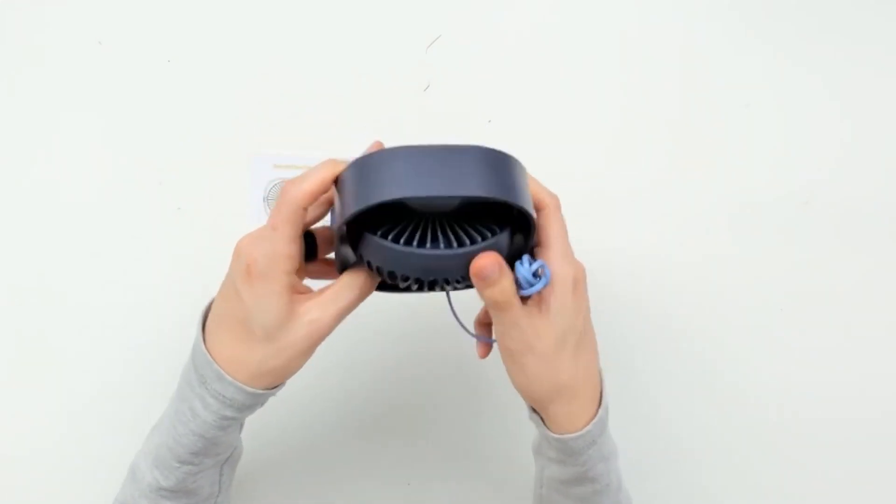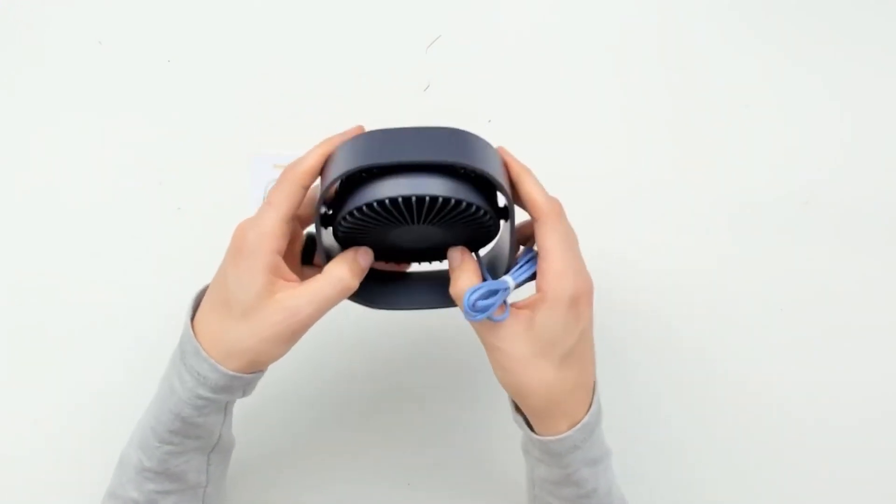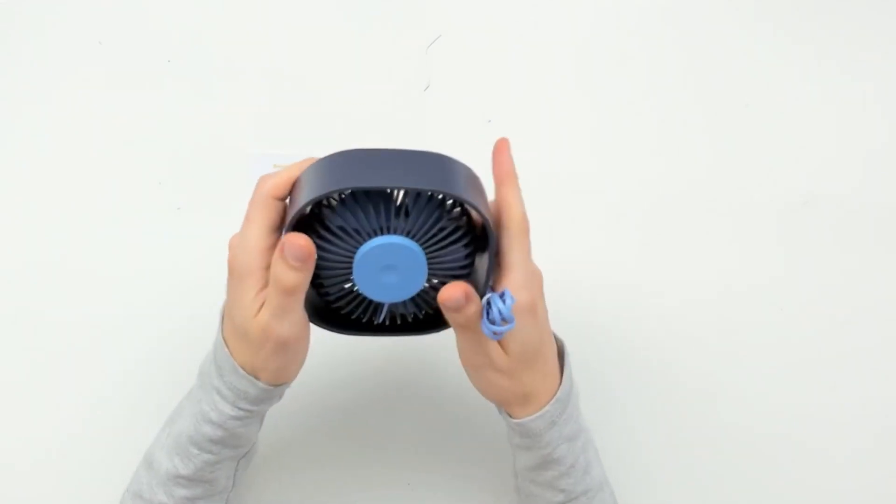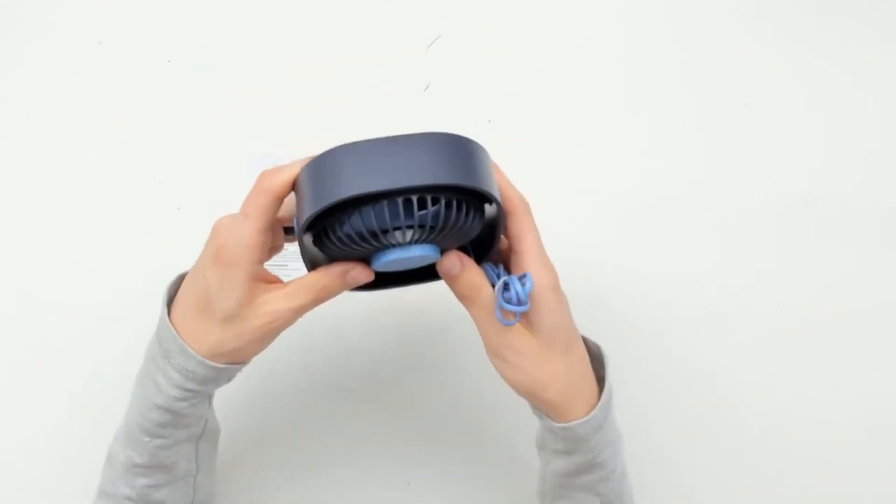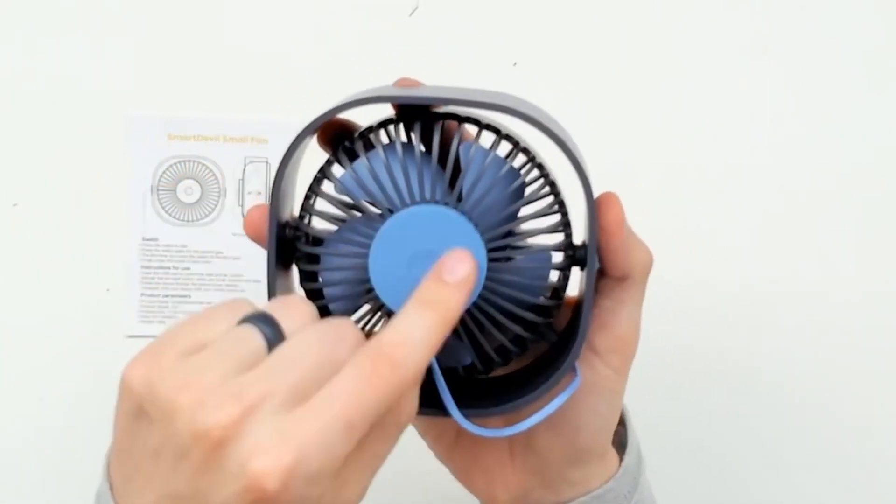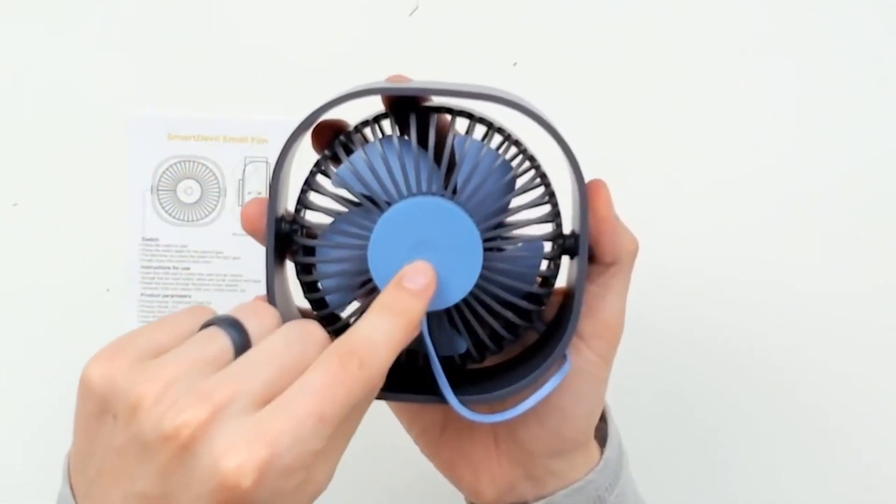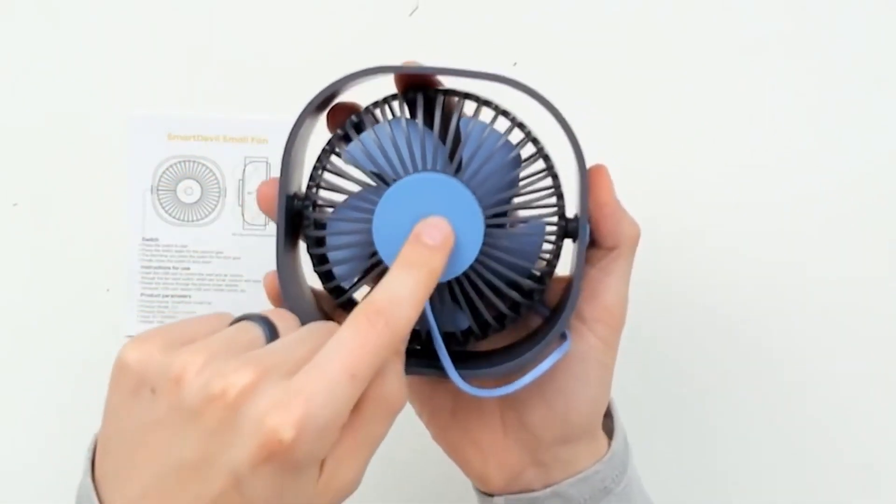In addition, the Tedgem is equipped with a USB cable which is 1.2 meters long. Thus, it can be recharged via 5-volt output from computers, power banks, or even portable charges. With its oscillation that goes up to 360 degrees, you can adjust it according to your personal preferences.